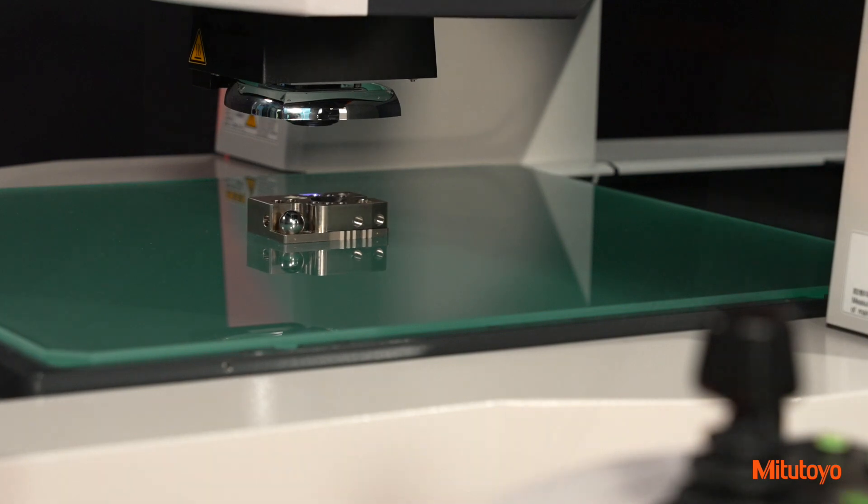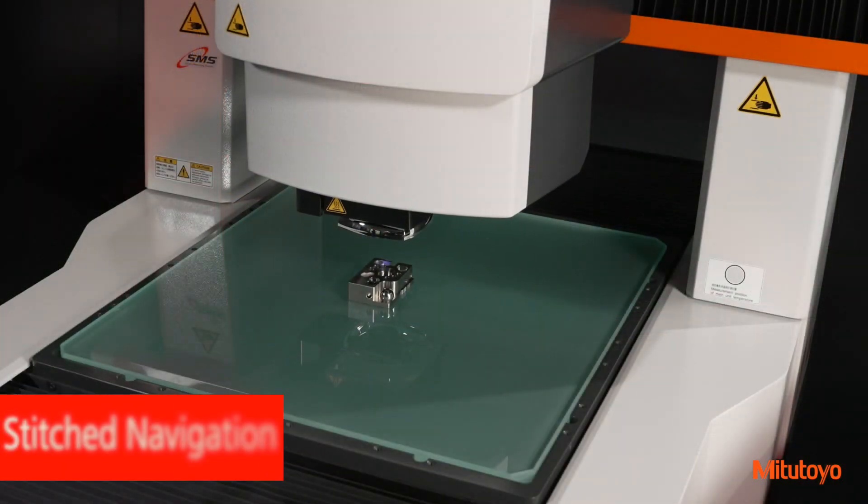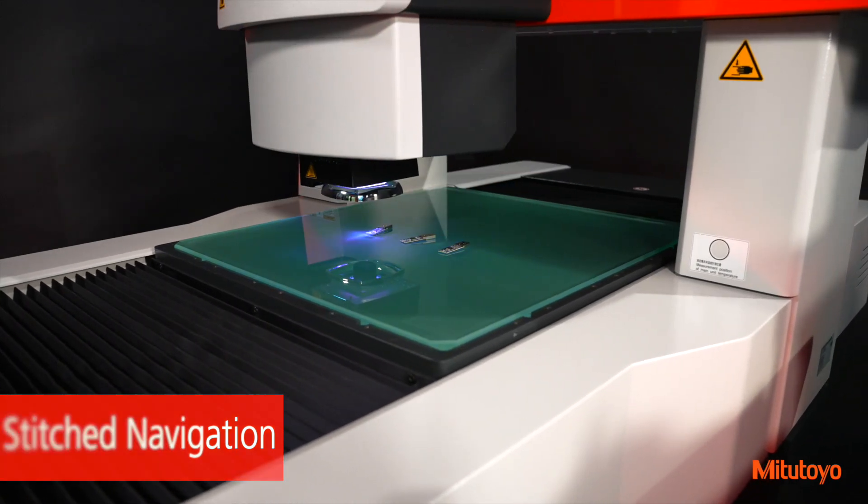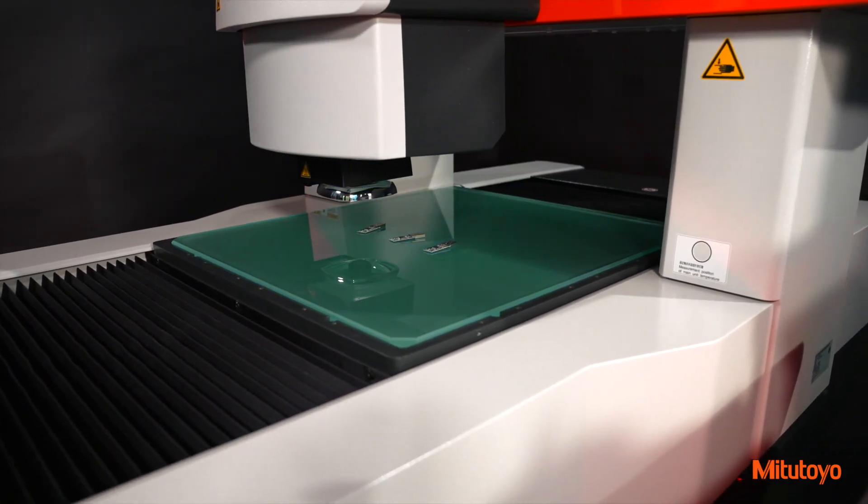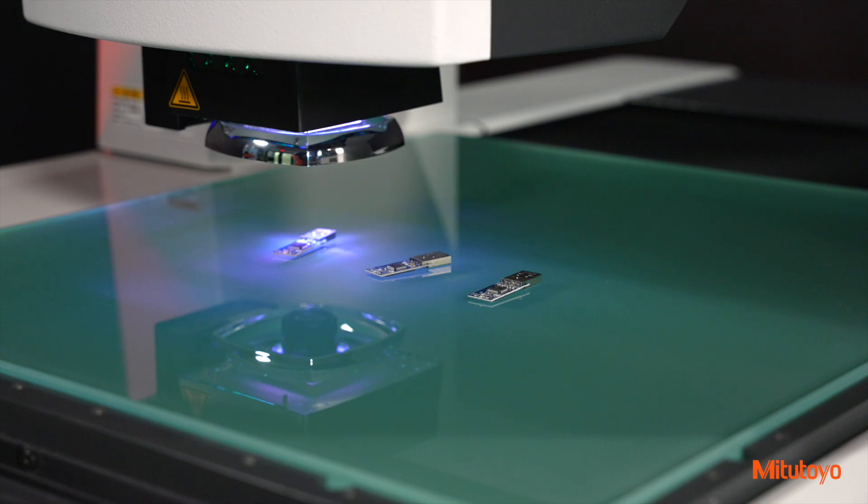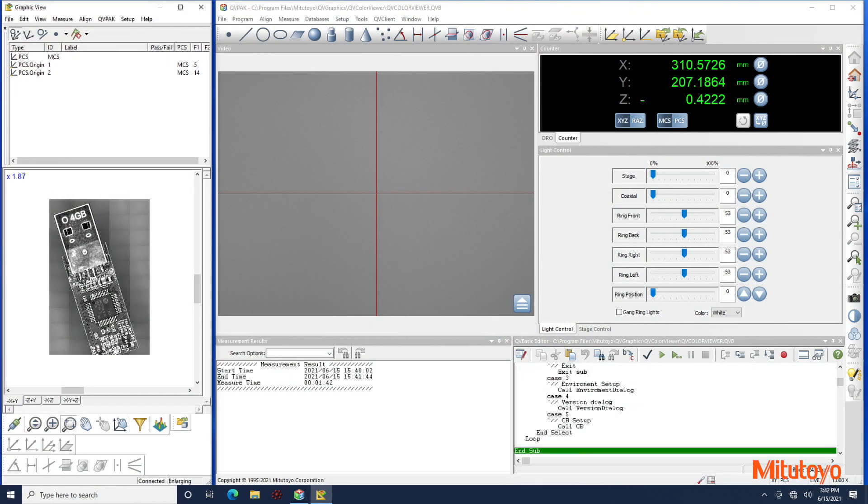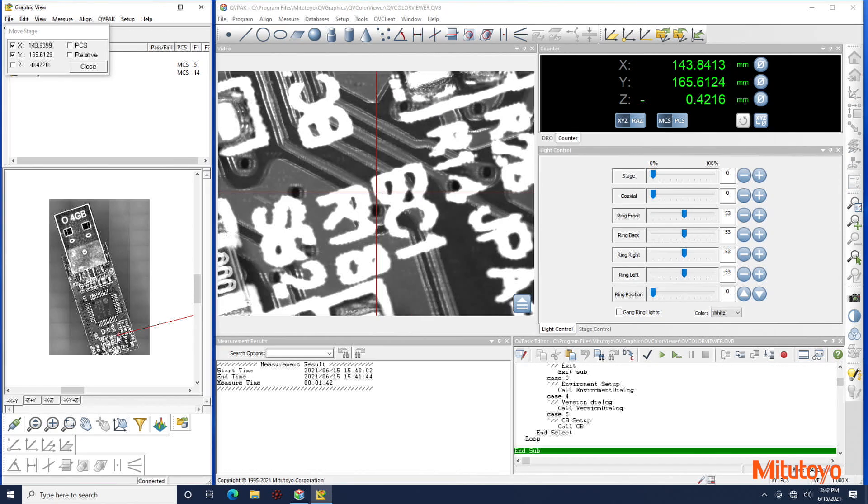QuickVision Pro adds stitched navigation. This new programming aid stitches camera images together into a single large image displayed on the QVPAC software. This stitched image is flexible enough to consist of a single large part or multiple parts. Stitched navigation can then be used to quickly navigate to desired measurement features.